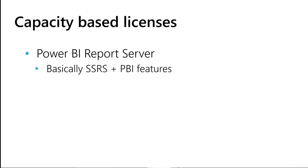Now let's talk about capacity-based licenses. There are two broad categories and four different SKUs. The first category is Power BI Report Server, which is basically SSRS under the hood — SQL Server Reporting Services plus some Power BI features. This makes sense either because of regulatory reasons you can't move to the cloud and you need an on-premises solution, or because you have a heavy investment in SQL Server Reporting Services and want to maintain that and take advantage of your team's existing skills.